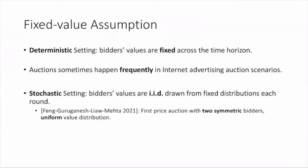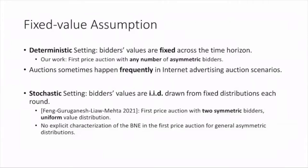Another setting is the stochastic setting, where bidder's values are IID drawn from fixed distributions each round. Fong et al. in 2021 studied the convergence of mean-based learning in first price auction with two symmetric bidders having uniform value distribution. However, there is no explicit characterization of the Bayes-Nash equilibrium in the first price auction for general asymmetric distributions. As far as we know, the uniform IID distribution result is the only result so far for the stochastic setting.